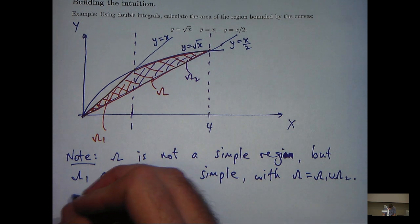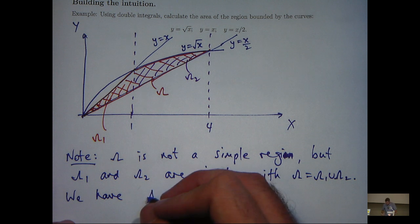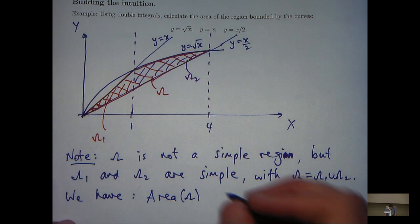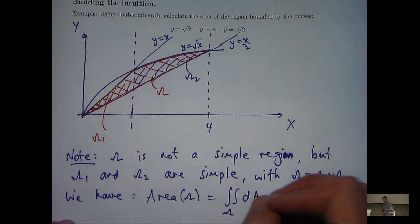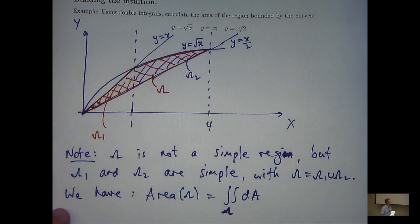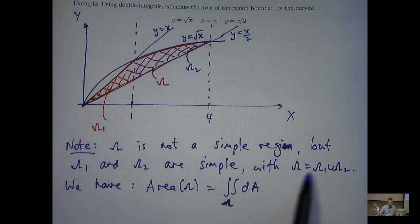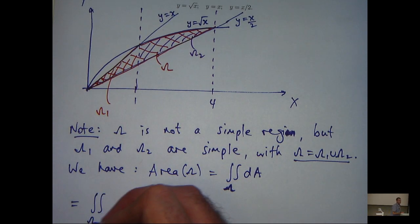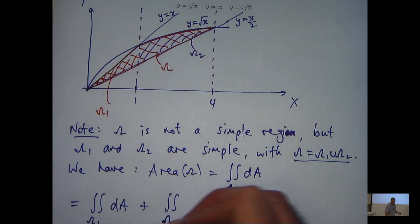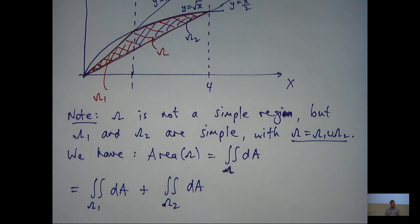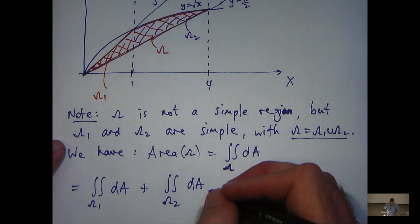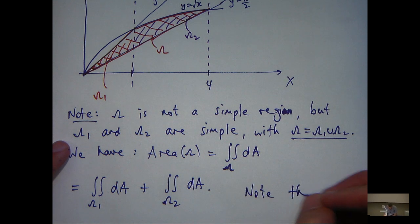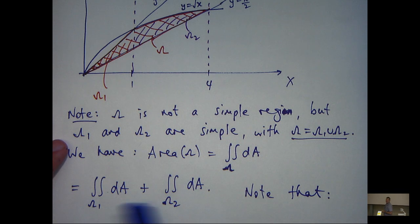So how do double integrals come into this? Well, the area of omega is just the double integral of the constant function 1 over omega. Now, because we have this relationship here, we can split this up into individual integrals over omega 1 and omega 2 and just add the two integrals together to form the total area. Now, to set up these integrals properly, we need to mathematically describe omega 1 and omega 2.